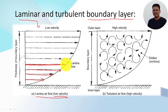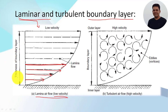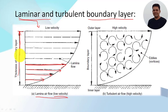This type of boundary layer is known as a laminar boundary layer. We are also aware of the boundary layer thickness — that is, the distance from the surface at which the velocity of the moving fluid equals the free stream velocity.